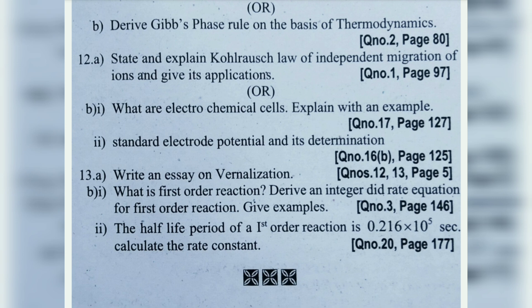13th (b) second one: What is the half-life period of a first order reaction? Given it is 0.216 × 10⁵ sec, calculate the rate constant.